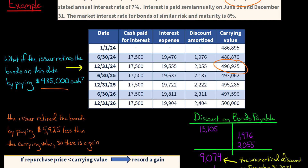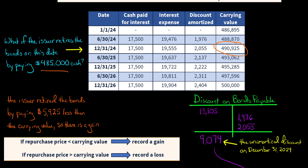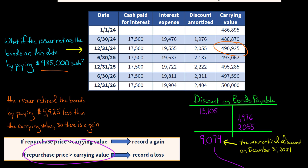You look at the difference between the cash paid to retire the bonds and the book value, or carrying value, at the time the bonds are retired. If there's a difference, you'll have a gain or loss. If the repurchase price is less than the carrying value at that time, you have a gain — which is the situation we have here, since we ended up paying less than book value. If you had to pay more than the carrying value to retire the bonds, the issuer would record a loss.